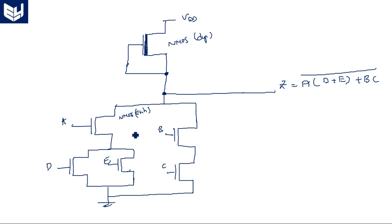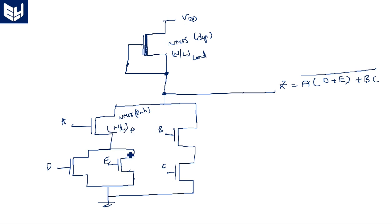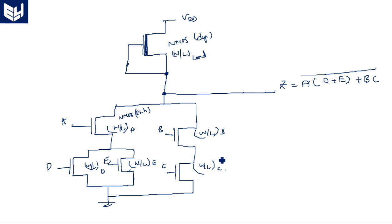In this particular realization of complex logic circuits, we mainly focus on the width-to-length ratio, W/L. For the load (pull-up depletion mode transistor), we have W/L_load. For each pull-down transistor named by its input: W/L_A, W/L_D, W/L_E, W/L_B, and W/L_C.